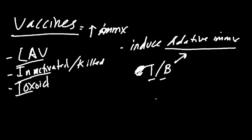Innate immunity is going to be your initial response — you're not going to have memory formation. However, for your adaptive immunity, you're going to have a B or T cell response. You're going to actually have memory for the future, so if you get infected again with the same bug, your immune system can mount a better defense against it.